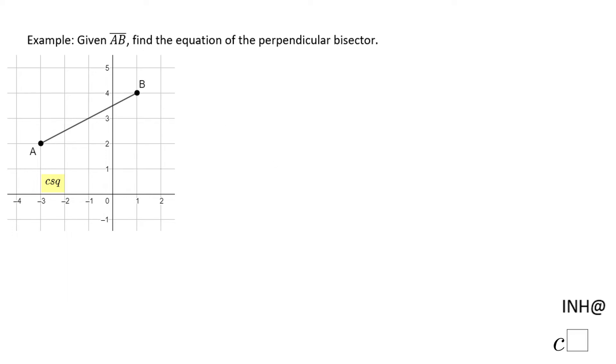Welcome or welcome back. A tiny help at C-square. In this example, we look at this given line segment AB, and we need to find the equation of the perpendicular bisector, as it's called.